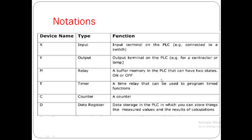Now let's look at notations — how we denote Mitsubishi PLC inputs, outputs, and other things. Input is denoted with X, output is denoted with Y. M is a relay or buffer memory in the PLC that can have two states: on and off. T is used for the denotation of timer — a time relay used to program time functions. C is used for counter. D is a data register for data storage in the PLC, in which you can store measured values and results of calculations.